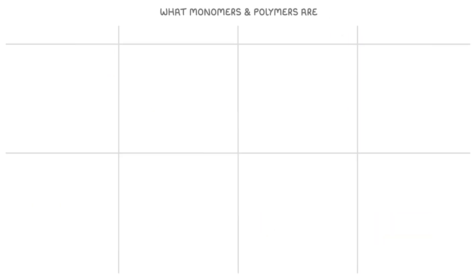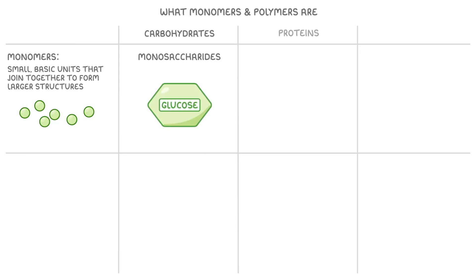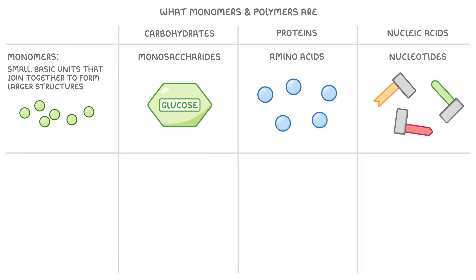Next, let's talk about what monomers and polymers are. Monomers are small basic units that can join together to form larger structures. For example, in carbohydrates we call the monomers monosaccharides, and these are just simple sugars, so things like glucose. In proteins, the monomers are called amino acids, and then for nucleic acids, the monomers are called nucleotides.